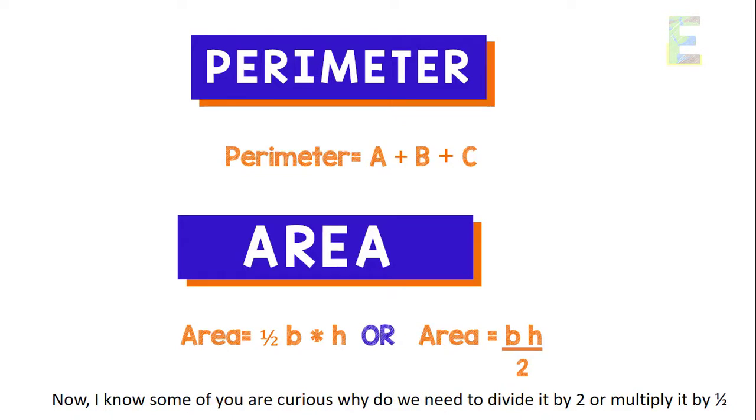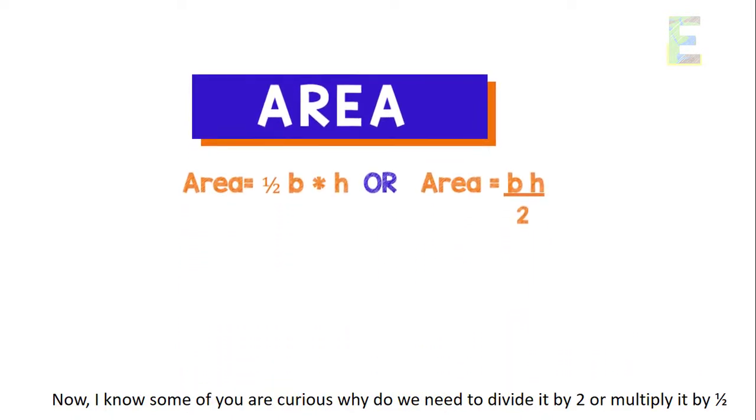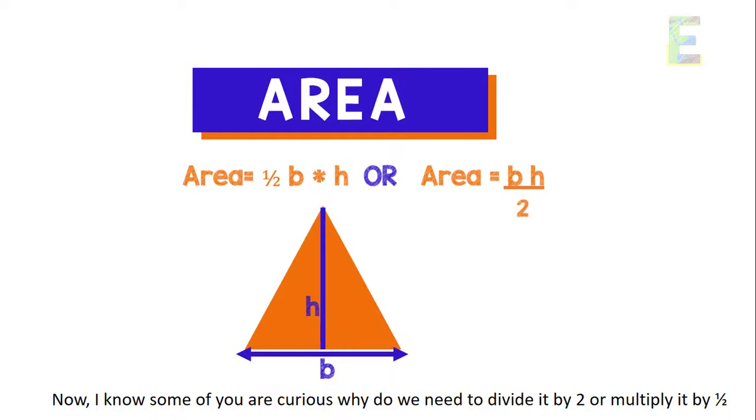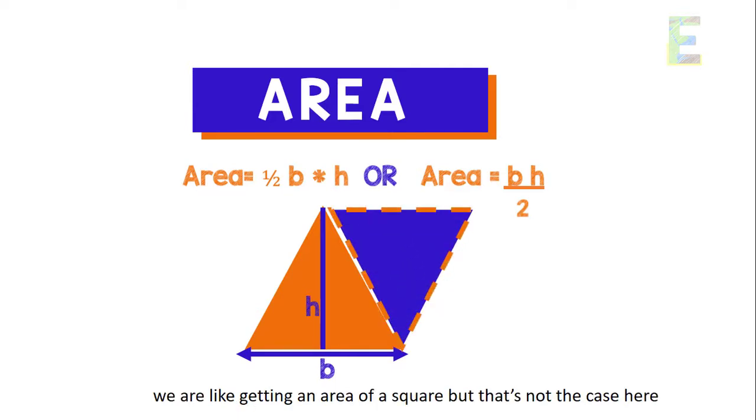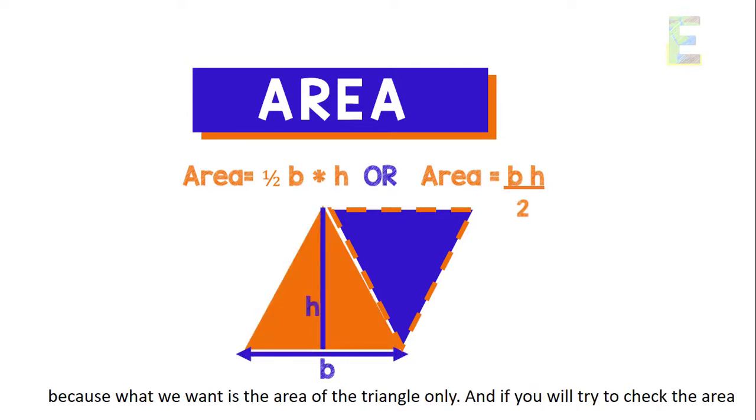Now I know some of you are curious why do we need to divide it by 2 or multiply it by 1 half. Well, if you have noticed, if we multiply its base and height only, we are like getting an area of a square. But that's not the case here, because what we want is the area of the triangle only.